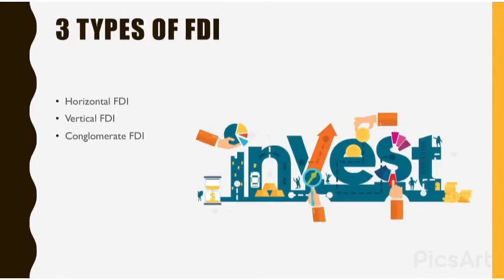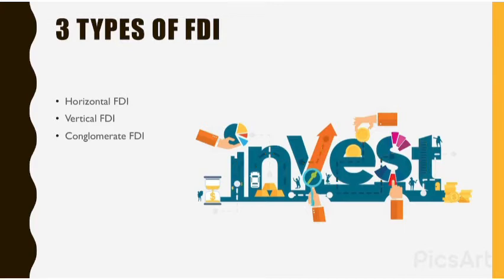There are three types of FDI: horizontal FDI, vertical FDI, and conglomerate FDI. Now we'll be looking at each of them with an example.